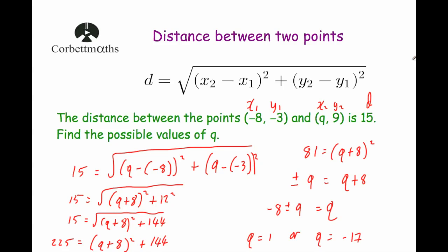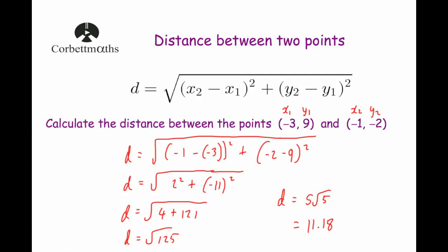And that's it. The distance between two points can be worked out using the formula d equals the square root of x2 minus x1 squared plus y2 minus y1 squared. Just remember that the two terms can be written either way around — it could be y2 minus y1 squared plus x2 minus x1 squared. That's it.